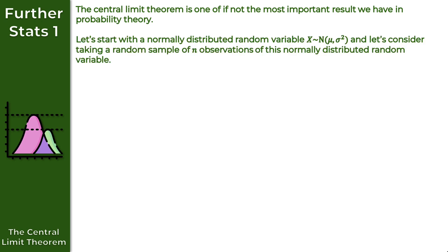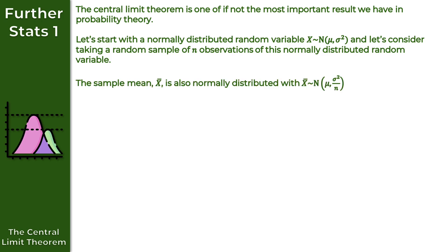So let's start with a normally distributed random variable. So x follows a normal distribution with the parameters mu and sigma squared. And let's consider taking a random sample of n observations of this normally distributed random variable. Then the sample mean x bar is also normally distributed with x bar following a normal distribution with the parameters mu and sigma squared over n.